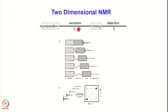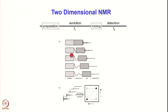The evolution time is an indirect detection period — the FID is collected only during the detection period. The experiment is done as a series of experiments: the preparation block remains the same, and you start with T1 equal to zero, collect FID number 1, then increment T1 by a small value delta-T1, collect FID number 2, then increment to 2·delta-T1 for FID 3, then 3·delta-T1, 4·delta-T1, and so on — systematically incrementing this period and collecting the FID each time.